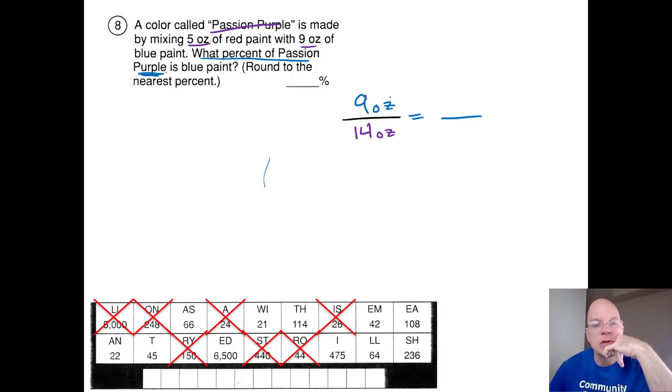Here's my nine ounces of blue paint compared to the total amount of passion purple. The total amount of passion purple would be 100 percent. I want to know what percent the nine ounces of blue is, and I don't see any nice scale factors. I can't simplify nine fourteenths because nine has only a three as a factor. Fourteen is not a multiple of three. I'm just going to use the cross-part equation.